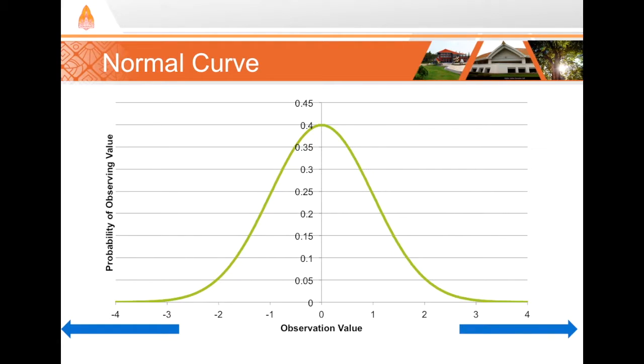Keep in mind though that normal curves are theoretical and no real data is truly perfectly normally distributed. The tails have no ends and they actually stretch to infinity, but as you get beyond 3 or 4 standard deviations it has really tiny probability values very close and near to zero.